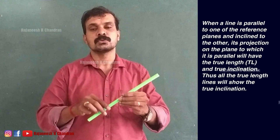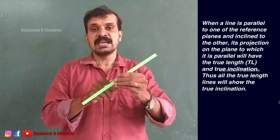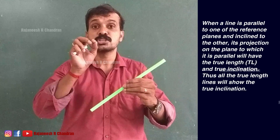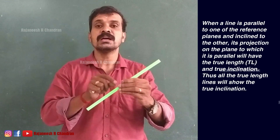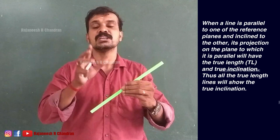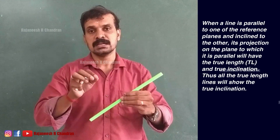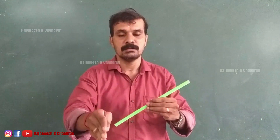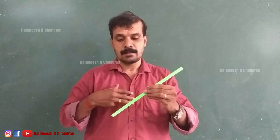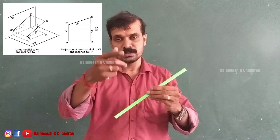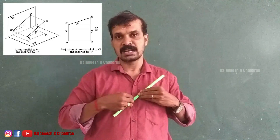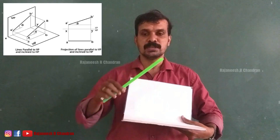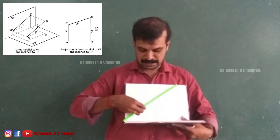One more point to add to this rule: when a line is parallel to one of the reference planes, the projection of the line on that plane will show true length, and all the true length lines will show true inclination. So we have reached a new term — true inclination. Now this line is parallel to VP, so when you are observing from the front, this line will be projected like this on VP.